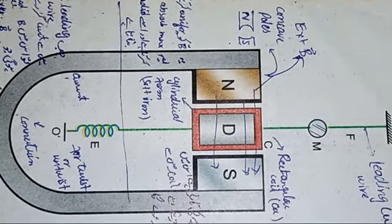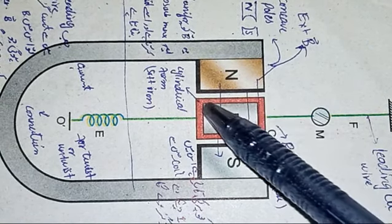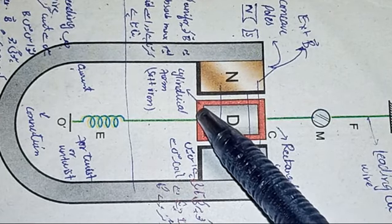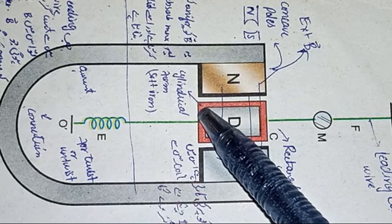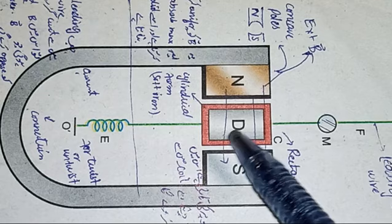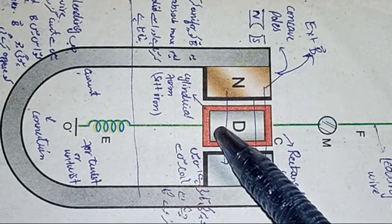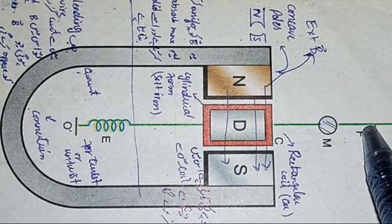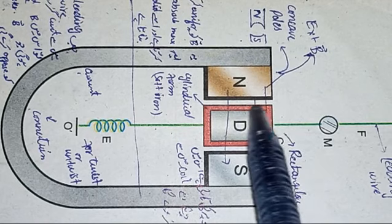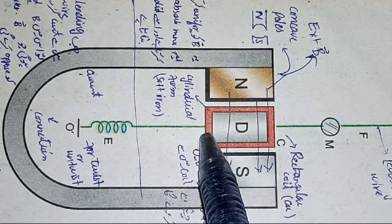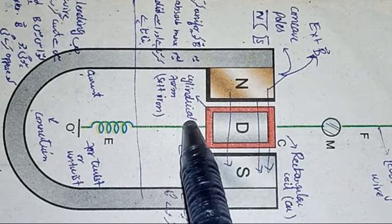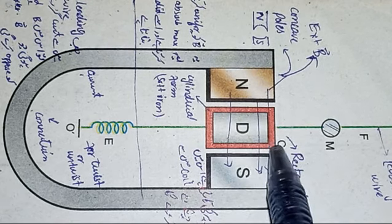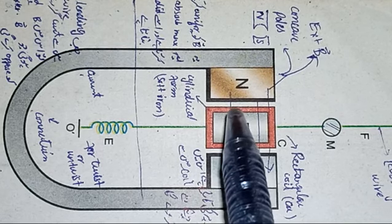A soft iron cylinder D is placed inside the coil to make the field radial and stronger near the coil, as shown in the figure. When a current is passed through the coil, it is acted upon by a couple. When a rectangular coil is placed between magnetic poles in a magnetic field and current passes through it, it experiences a force, and due to this force it tends to rotate.